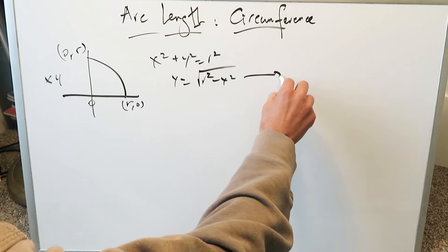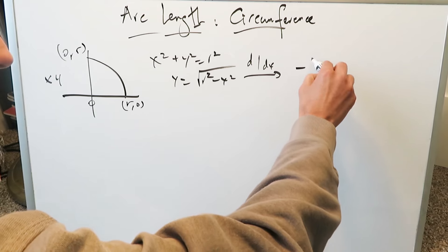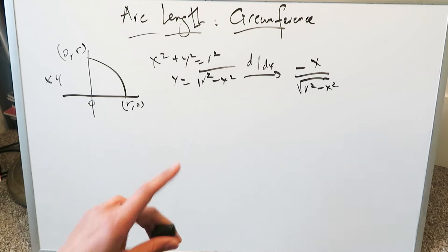You do the derivative of this, you can do it. Chain rule. You'll get here as a derivative -x/√(r² - x²). You can do that derivative procedure and you can easily come to that result.